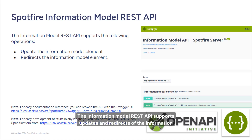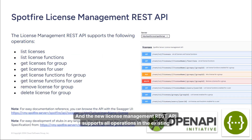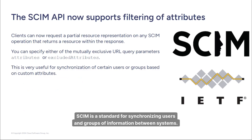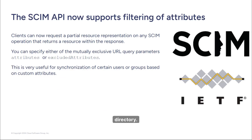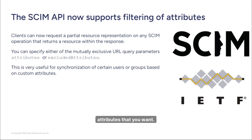The Information Model REST API supports updates and redirects of information model elements. The new License Management REST API supports all operations in the existing license SOAP API, meaning you can automate user license configuration such as for onboarding new users. SCIM is a standard for synchronizing users and group information between systems. Now in Spotfire 14.2, we have added support for filtering when synchronizing the user directory, allowing you to add or exclude specific users or groups from synchronization based on the attributes you want.